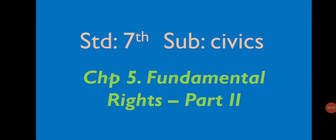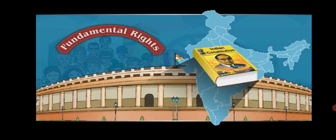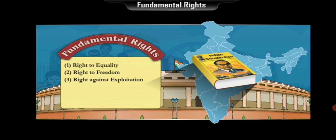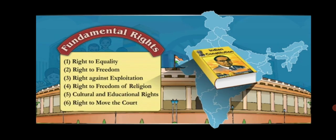Standard 7, Subject Civics, Chapter 5: Fundamental Rights, Part 2. Dear students, in the last chapter we studied some fundamental rights guaranteed by the Indian Constitution. We studied the right to equality, right to freedom, and right against exploitation. In this chapter we shall also learn about the right to freedom of religion, cultural and educational rights, and the right to move to the court. Let's begin with the right to freedom of religion.